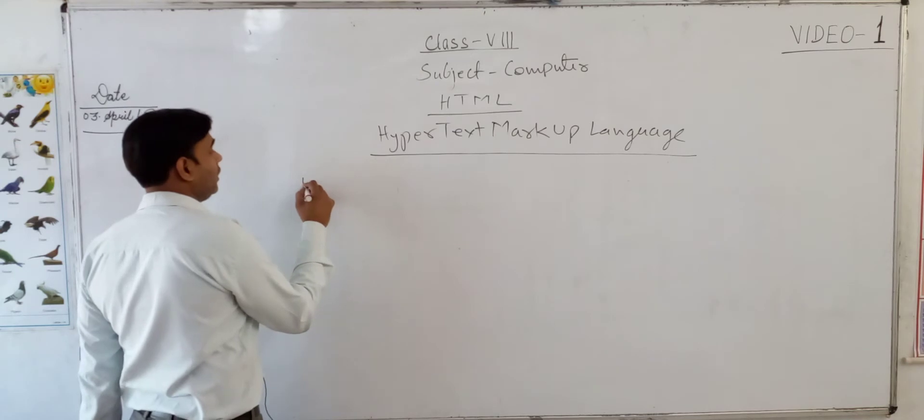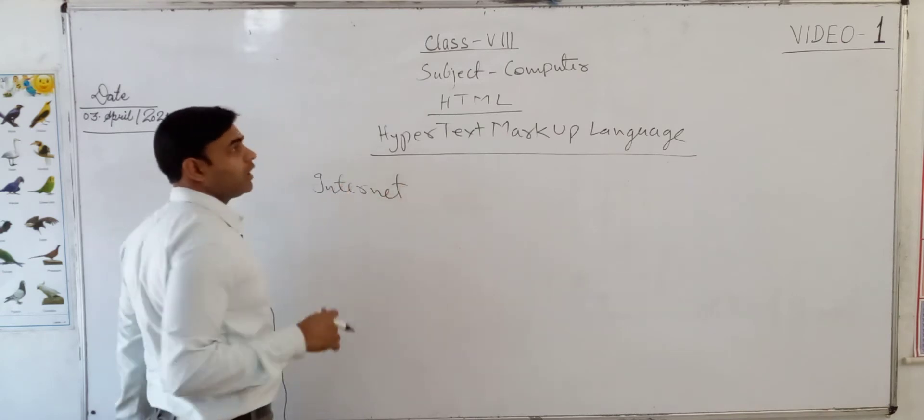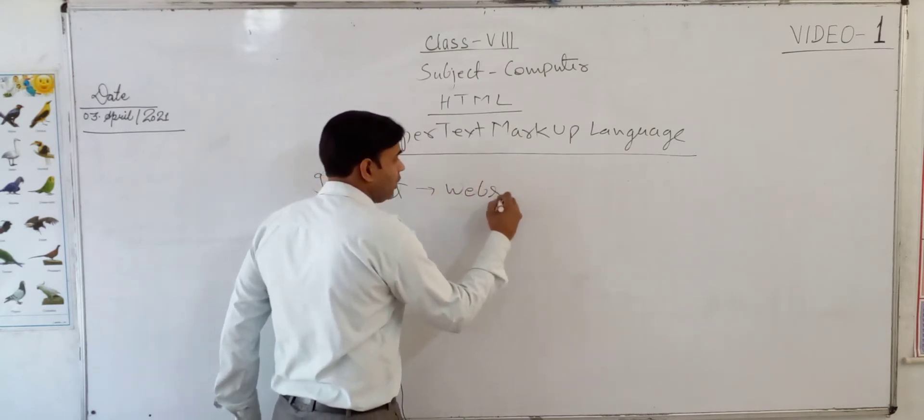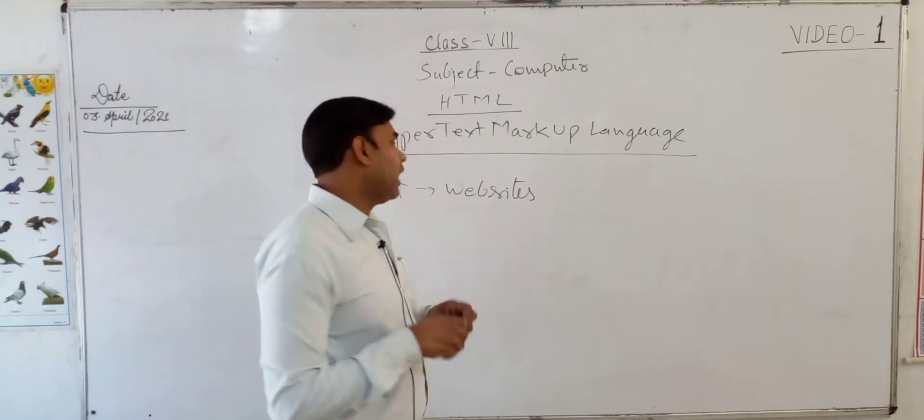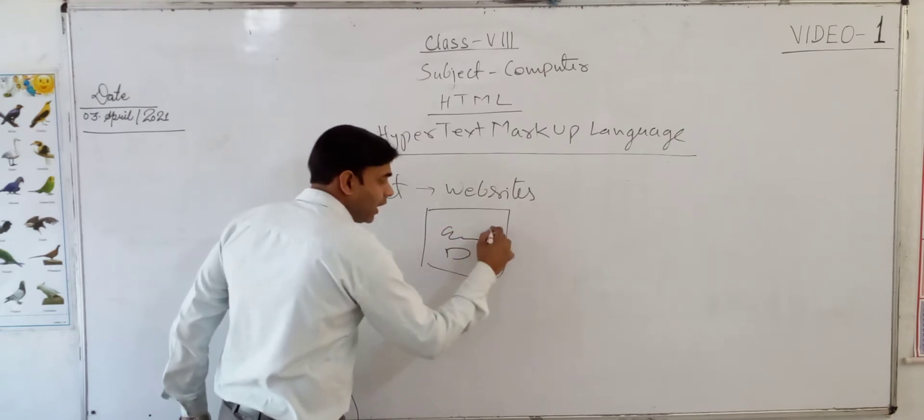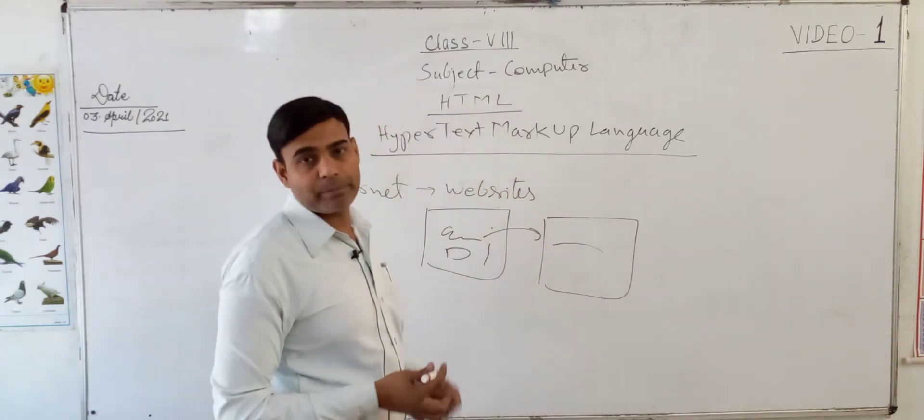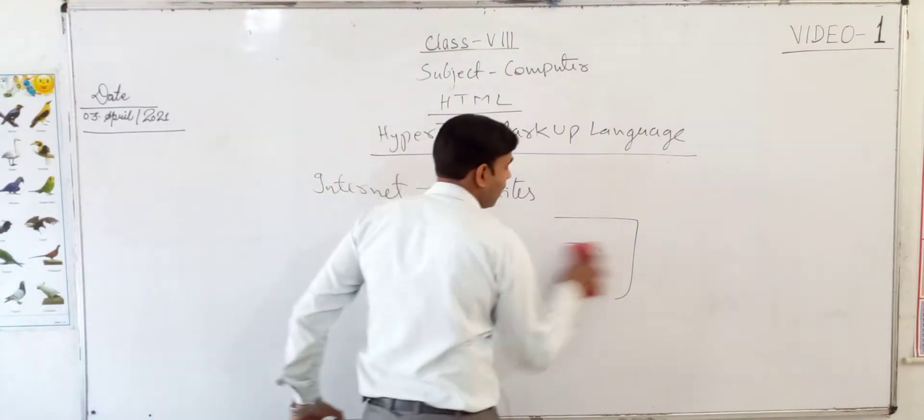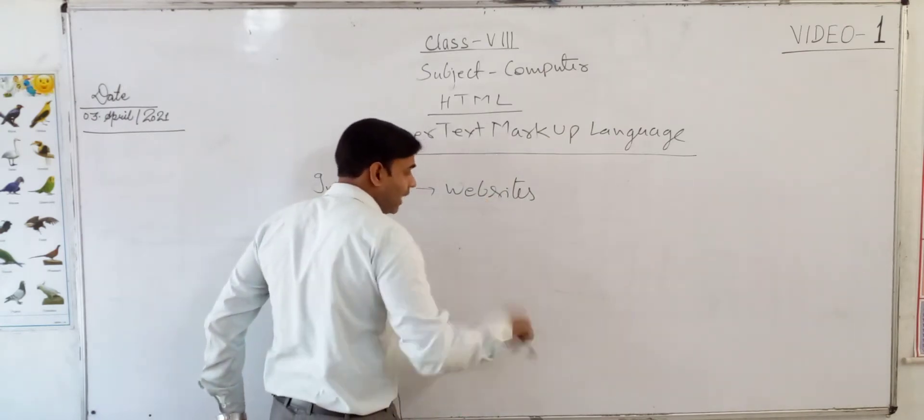First of all, we need to understand that whenever we work on the internet, we use different websites. Websites are what? If you look at particular websites like google.com, it is a link. And whenever you click on any other link, it takes us to some other page. It means in website, we have various web pages.